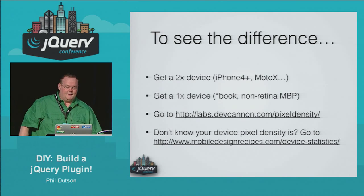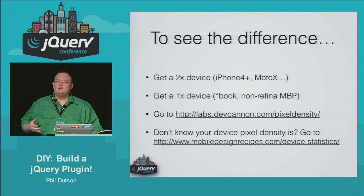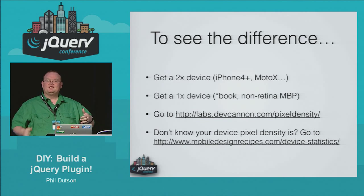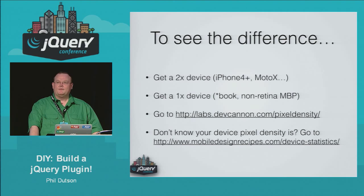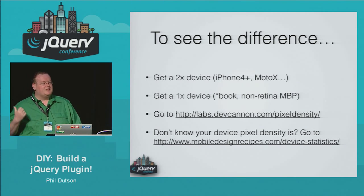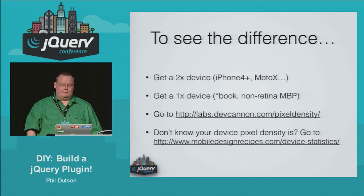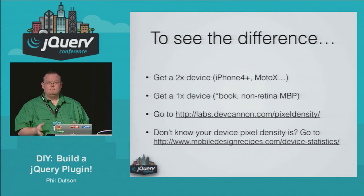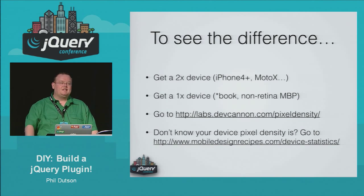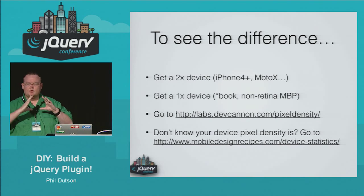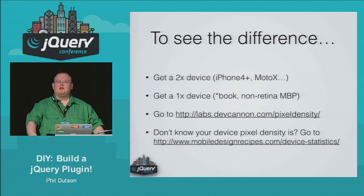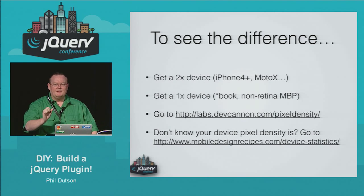In order to see the difference, you need to get a 2x device, a 3x device, and a standard device — grab a Chromebook, a non-Retina MacBook, a netbook if they still make them. Head over to the sample website at labs.devcanon.com/pixel-density. If you don't know if your device is Retina or what the pixel density is, head over to mobiledesignrecipes.com/device-statistics and you'll get everything your browser reports as having. If you cannot see a difference, find a designer, hand them your devices, and just watch their facial expression — they will instantly let you know which image you need to be using.